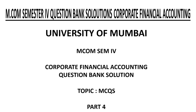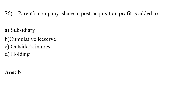University of Mumbai MCOM SEM 4 Corporate Financial Accounting Question Bank Solution, Topic MCQs Part 4. Parent Company Share in Post Acquisition Profit is added to Option B Cumulative Reserve. The correct answer is Option B Cumulative Reserve. Parent Company Share in Post Acquisition Profit is added to Cumulative Reserve.